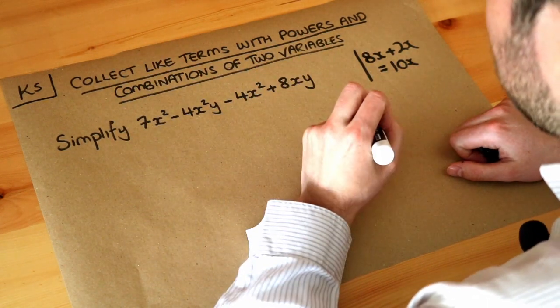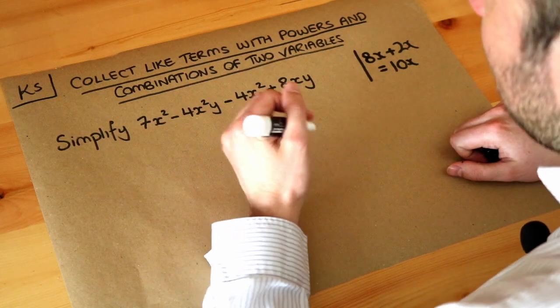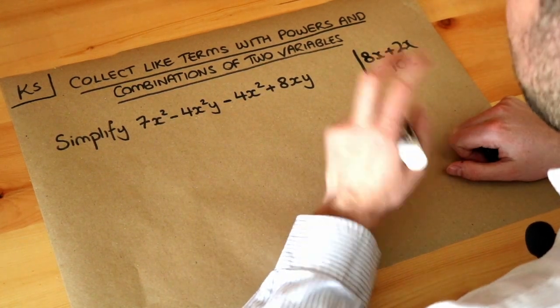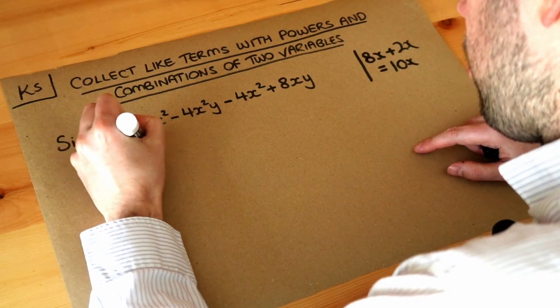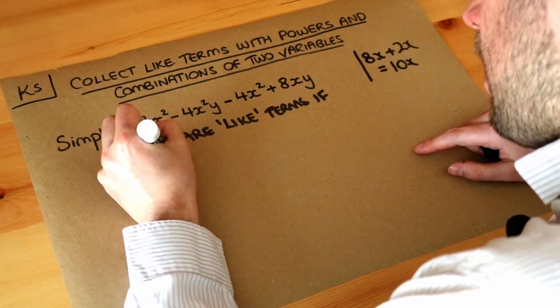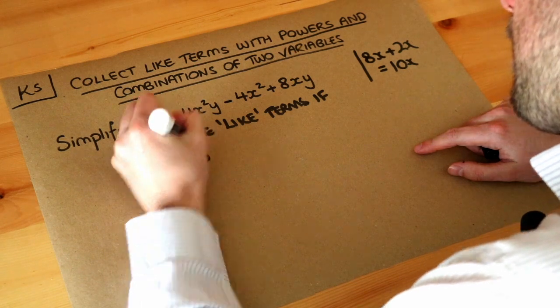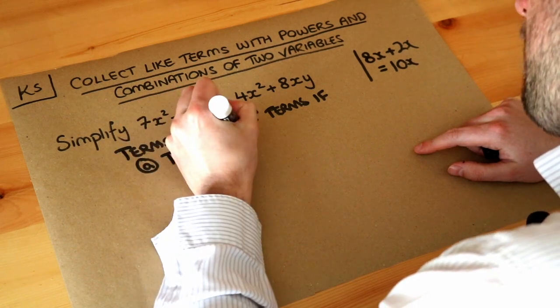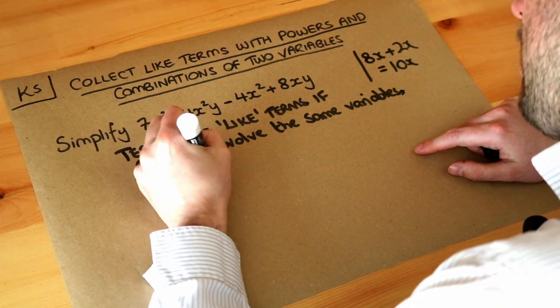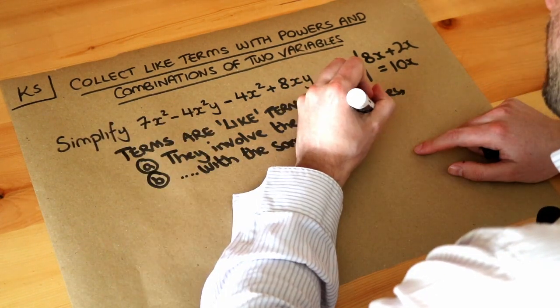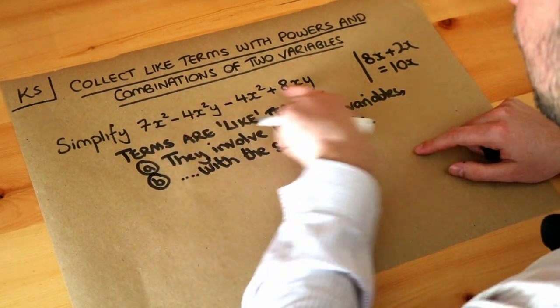So let's think back to what the rules are of when we have like terms and when we don't have like terms, when terms are similar or not. So terms are like terms if they involve the same variables, so the same letters, and those variables have the same powers. So let's apply these rules on here.